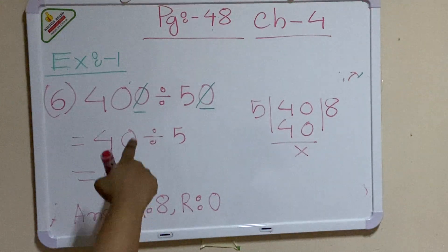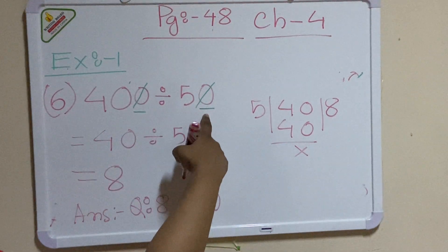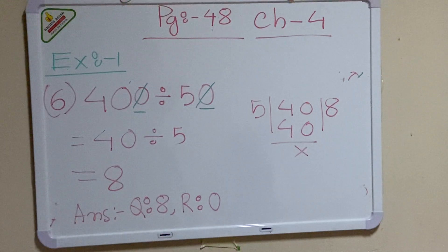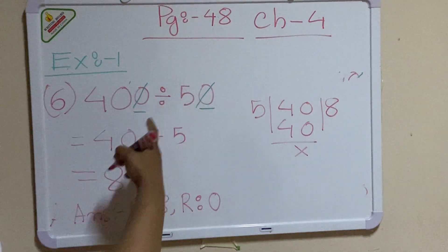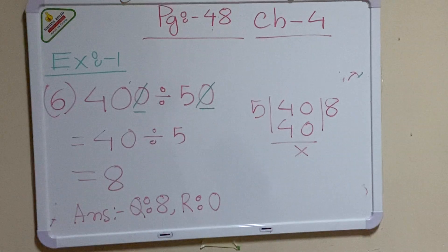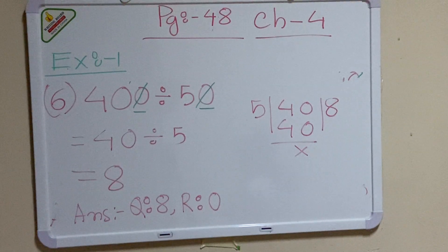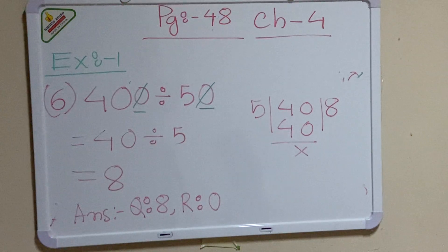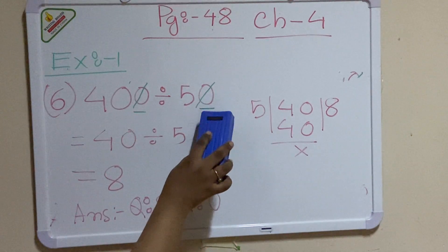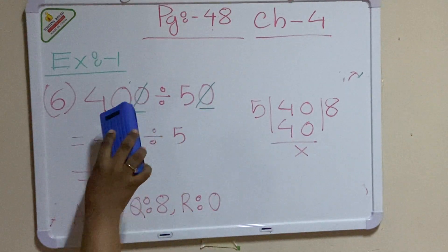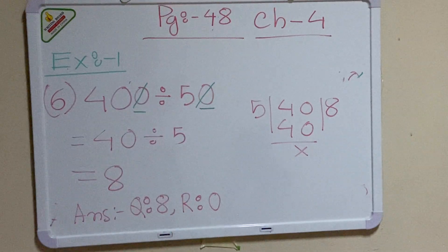Look here — there is one zero in the dividend and one zero in the divisor. The zeros are equal, so I can cut them and write the remaining numbers. In the division process, I cut the equal number of zeros from both the dividend and divisor.